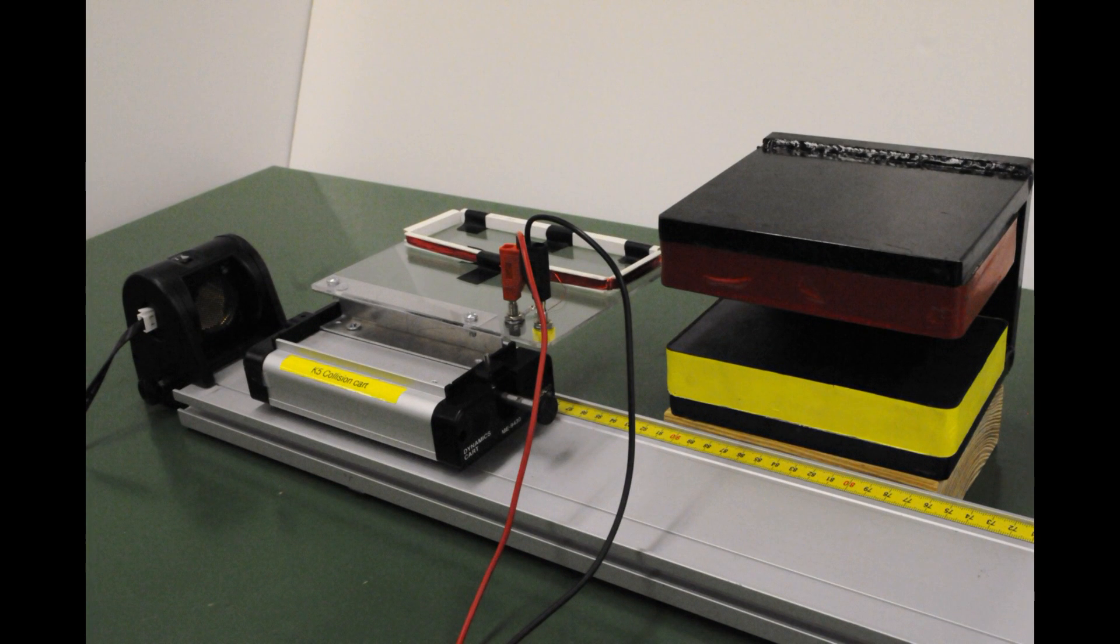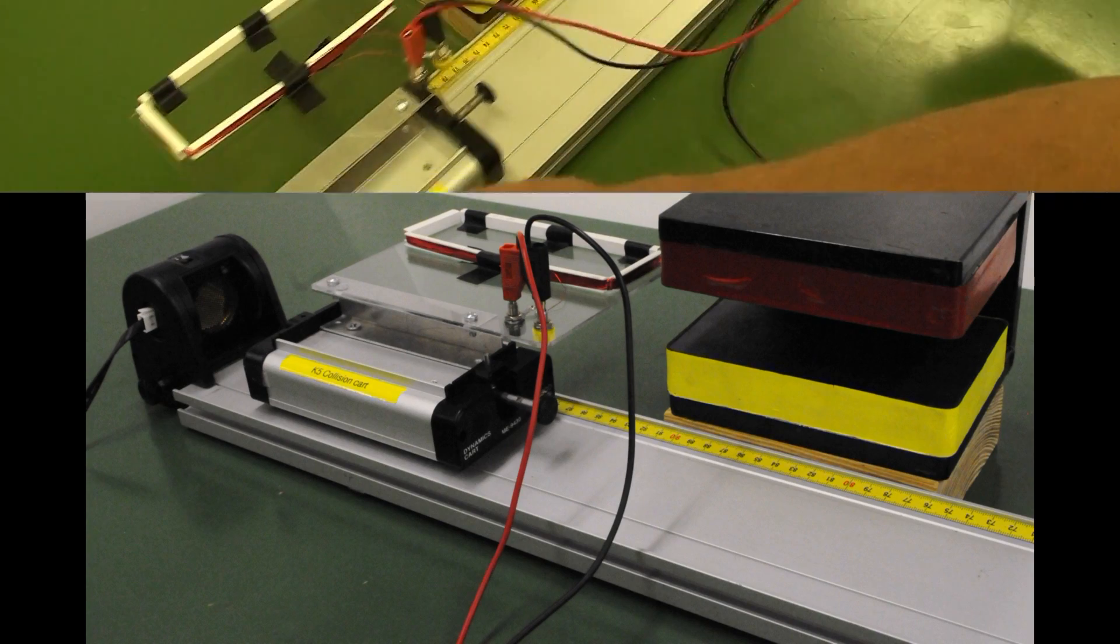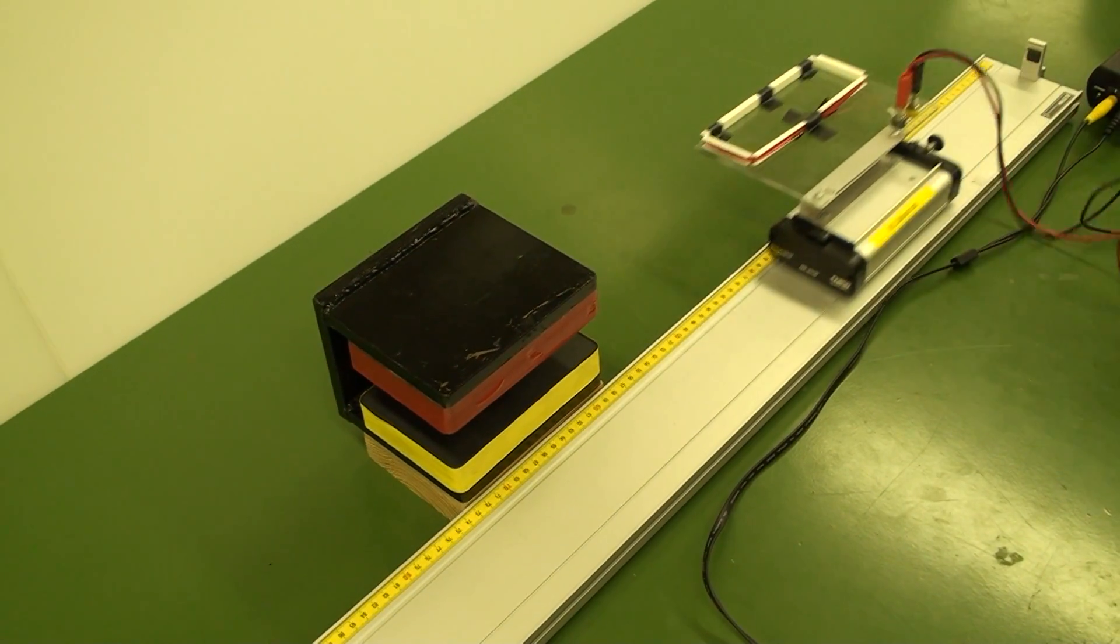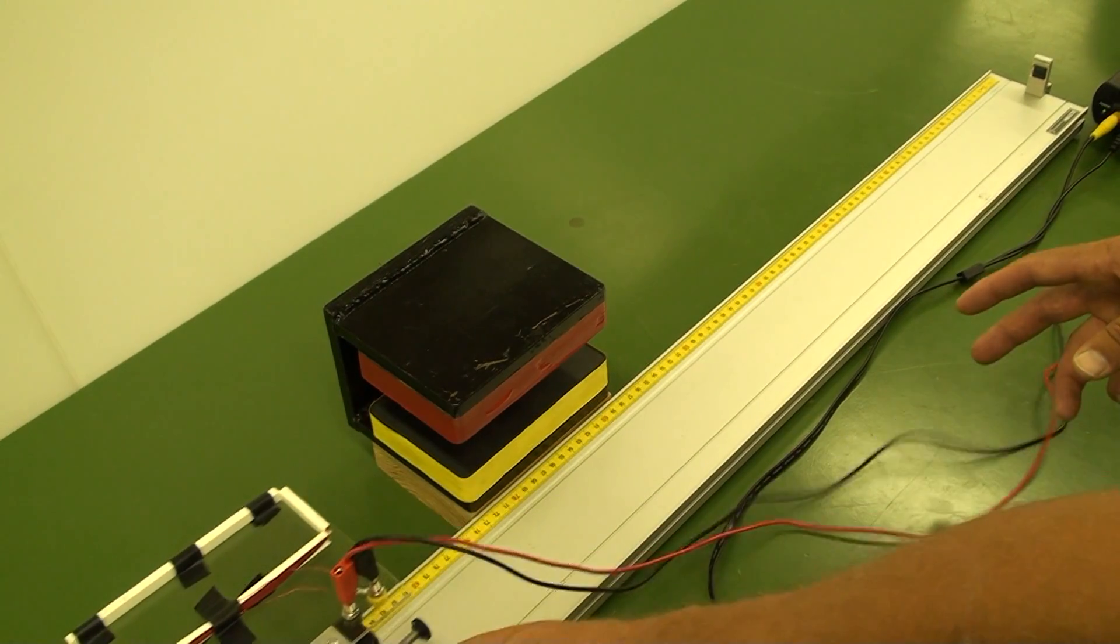The motion sensor on the left will be used to measure the velocity of the cart, and the voltage probes will feed the induced EMF data to Science Workshop and the computer. You may consider taping a reflecting piece of card stock to the back of the cart, so the motion sensor has a clearer view of the receding cart. Give the cart a shove shortly after the Start button in Data Studio has been clicked.